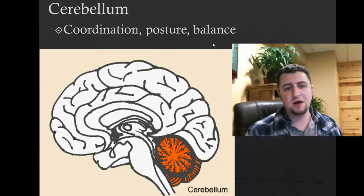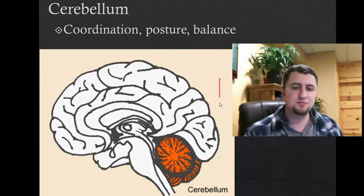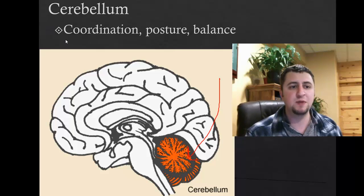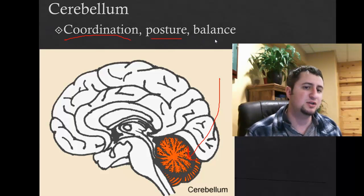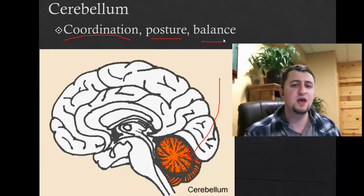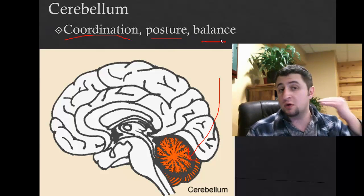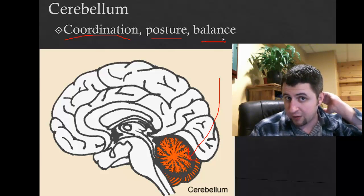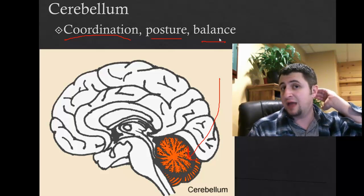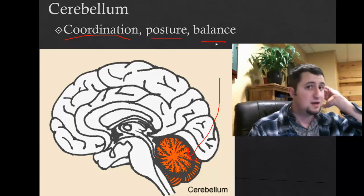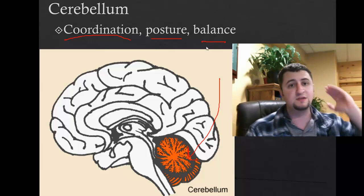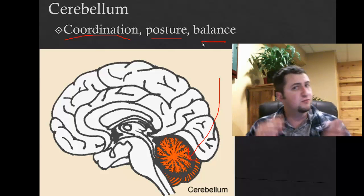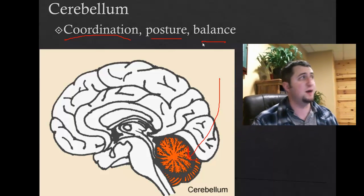The cerebellum is primarily responsible for coordination, posture, and balance. A tumor or malfunction in that part of the brain will not allow a person to maintain proper balance and posture, making it very difficult for a person to play sports and perform coordinated activities.